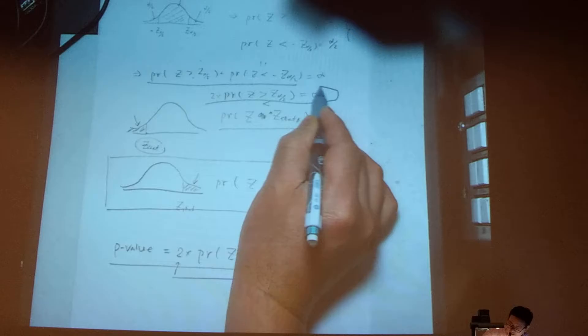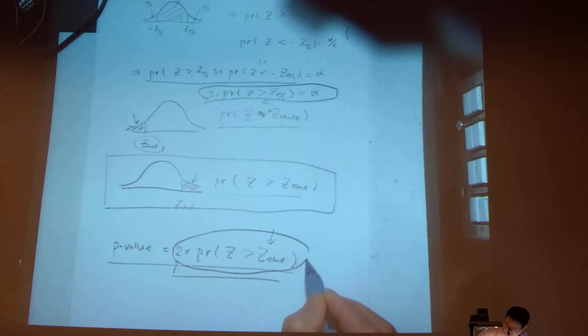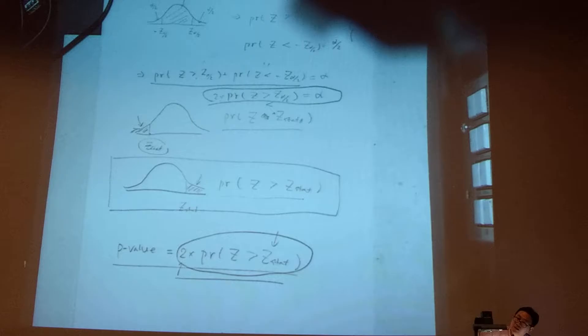So this one plus this one, or two times this one, is equal to what? Alpha. Right? Because this one and this one is the same. So basically I have two times this guy is equal to alpha.